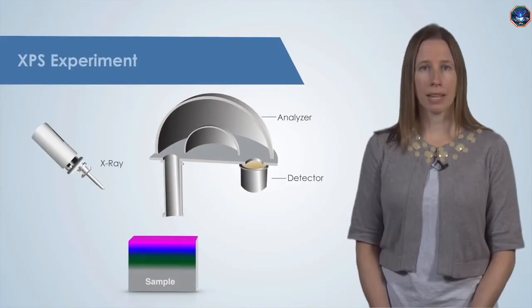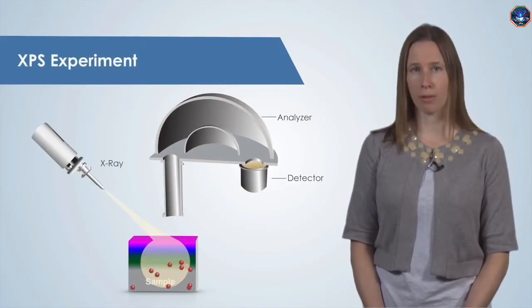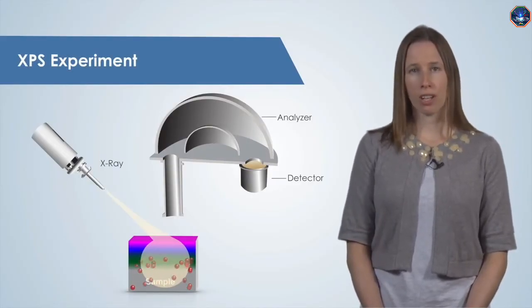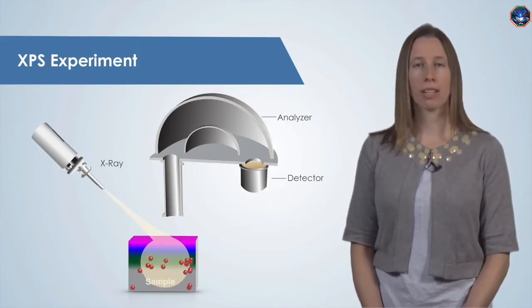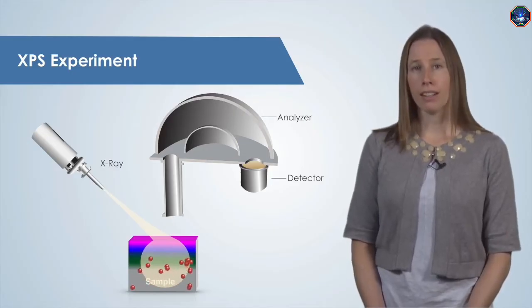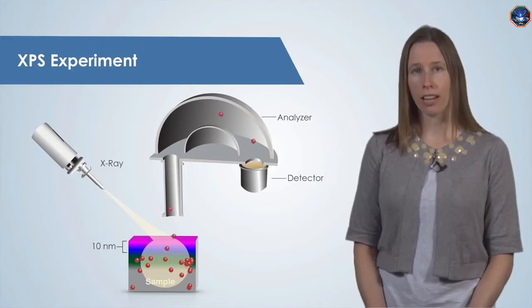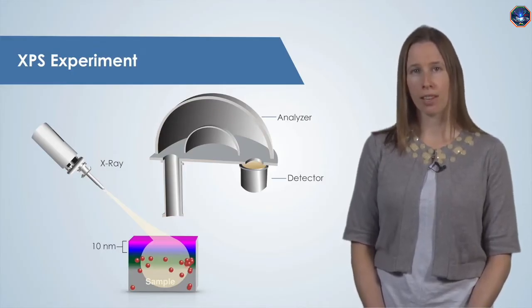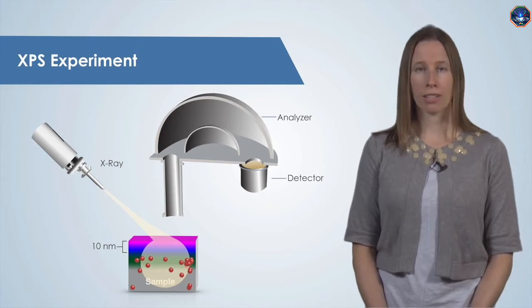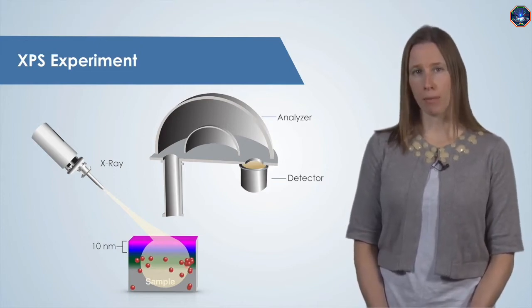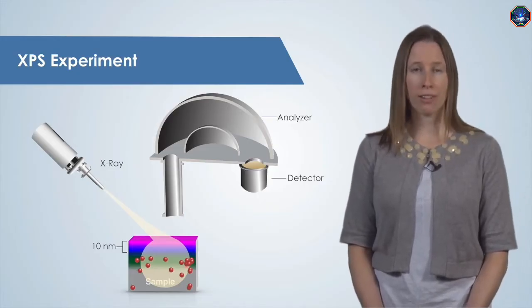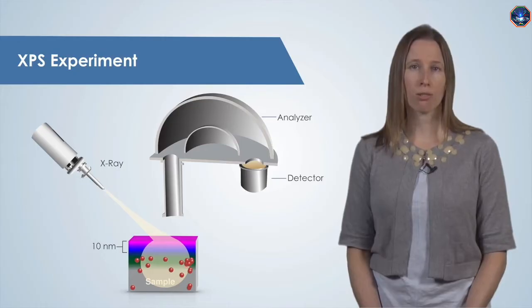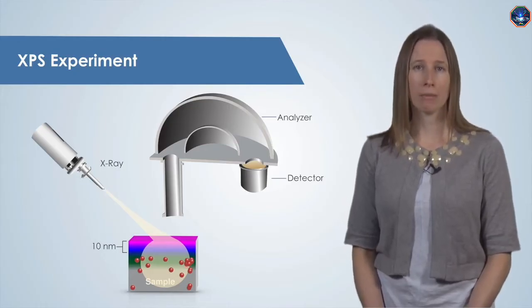When X-rays hit the sample, they penetrate fairly deep into the sample. Many of the electrons generated will scatter off other atoms in the sample, lose all of their energy and become trapped in the sample. But electrons that are generated within the top 10 nm of the surface have a very good probability of escaping the sample and traveling towards the analyzer and detector. We call this the escape depth of the electrons. Only electrons that escape can be analyzed, and therefore, XPS is used to characterize only the top 10 nm of the sample.